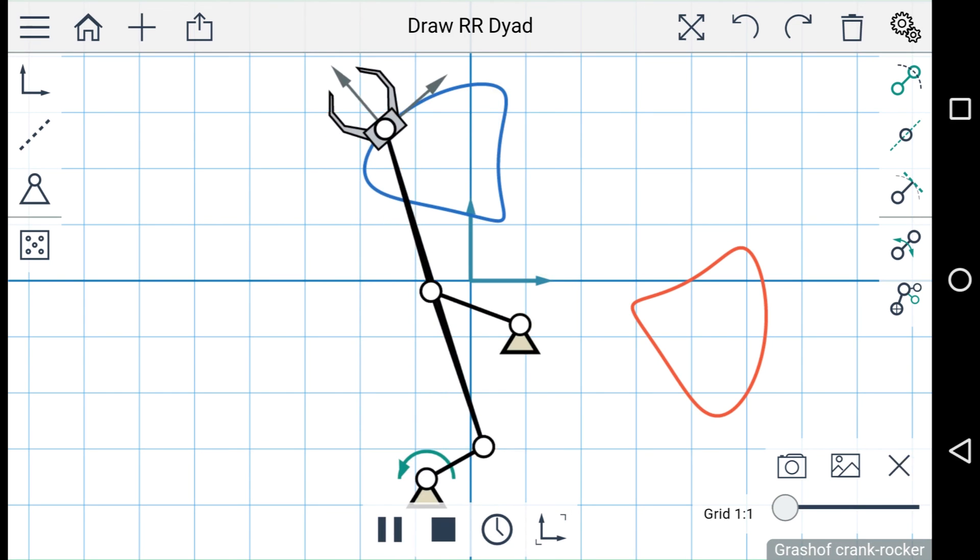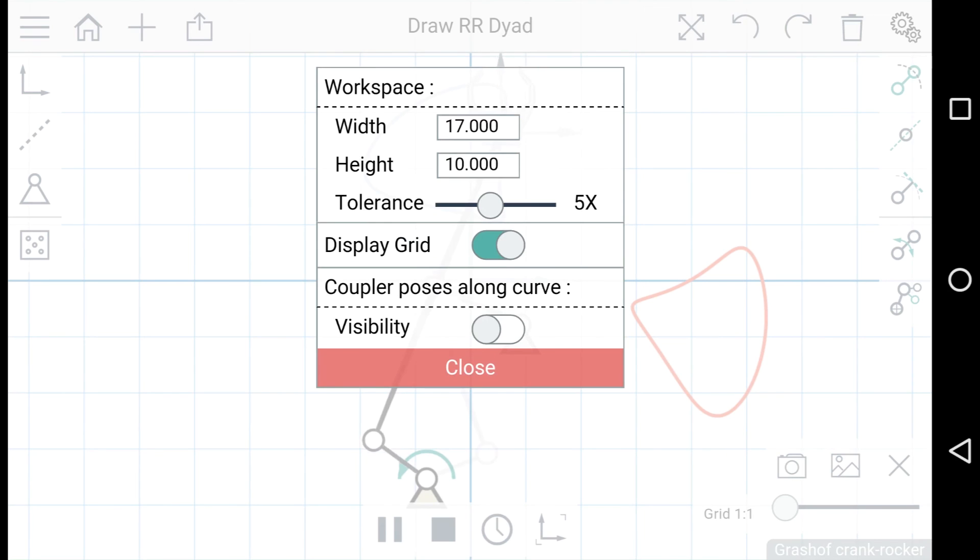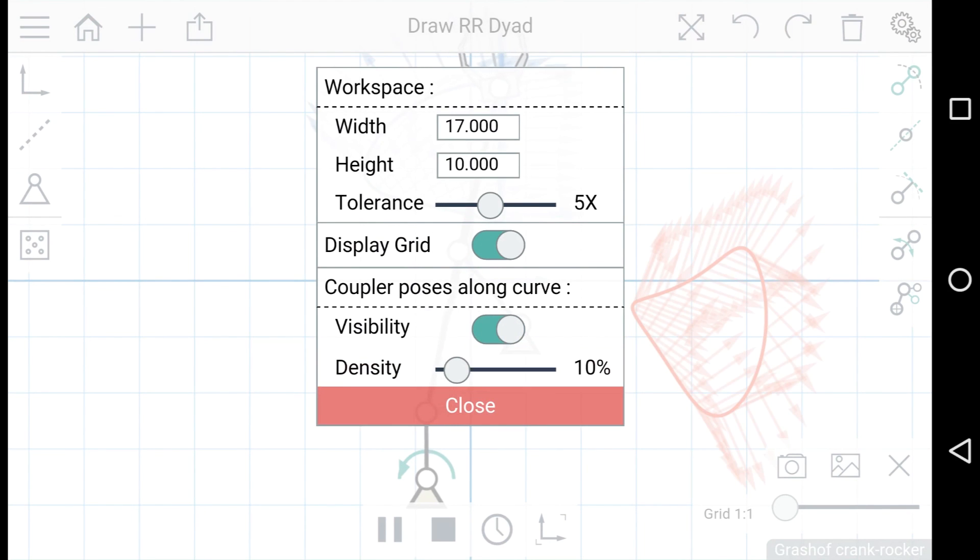Finally, there's an option in the settings menu in the top right corner. And this setting here shows you the coupler positions at various points along the curve.